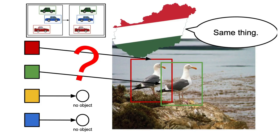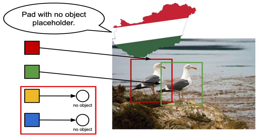You can think of the predicted bounding boxes as the first frame and the ground-truth bounding boxes as the next frame, if you find that easier. Also, if there are more object queries than objects in the image, the ground-truth is padded with placeholders that correspond to no real object. Now we know how to match the predictions to the ground-truth labels, so we can compute the loss and train the model.